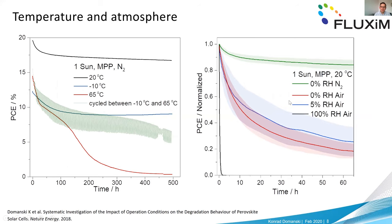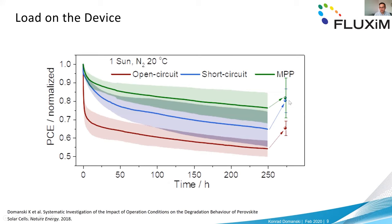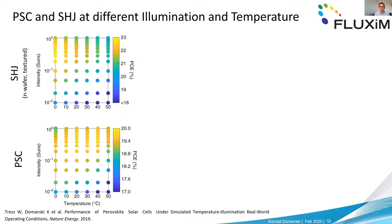The load on a device can play a crucial role — whether it's at maximum power point, short circuit, or open circuit. Reverse bias is very important: if any cell in a module is shaded, it can be driven into reverse bias and absolutely destroyed. With those questions in mind, we designed an experiment testing perovskite and silicon heterojunction cells across a parameter space of different temperatures and light intensities.